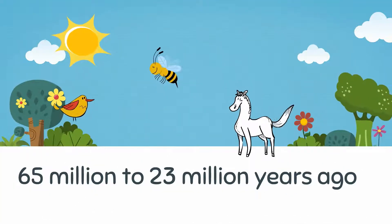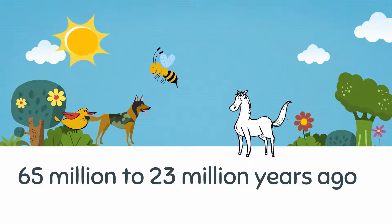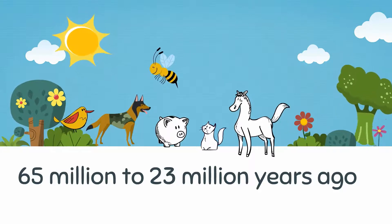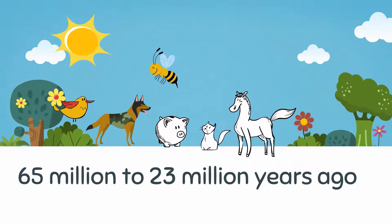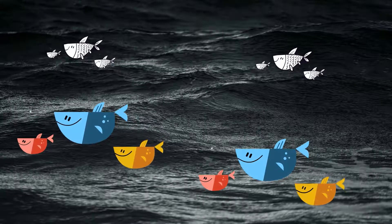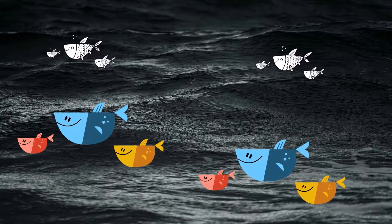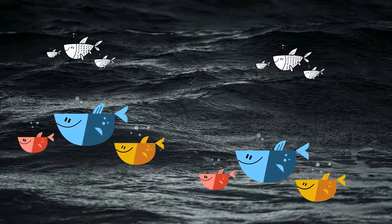Many of the animals that we like today, including dogs, cats, and pigs, appeared in the Paleogene. Sharks and whales roamed the ocean and freshwater fish branched out.